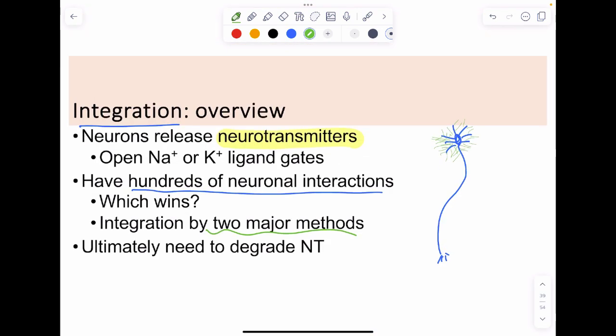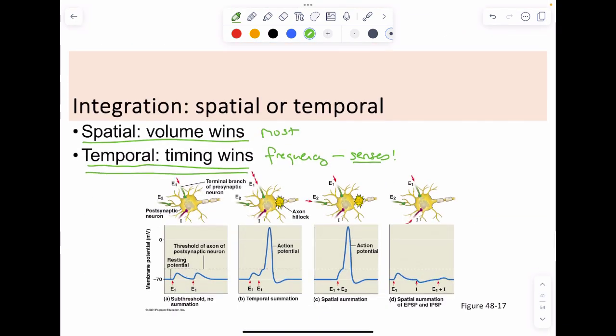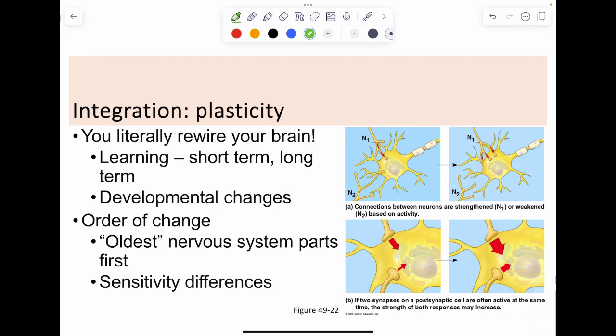Ultimately what we have to do once we have all this interaction is we have to get rid of those neurotransmitters, and this can be done by degradation or uptake with pathways.